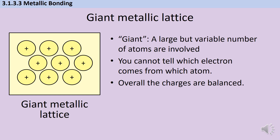When you're looking at that metal, you can't tell which electron has come from which atom. They've been completely delocalised, so they're no longer associated with the atom that they originally came from. Overall, the number of charges are going to be balanced. So if I have 1,000 sodium atoms that have lost 1,000 electrons, I'm also going to have 1,000 plus-1 ions. And if I have 10,000 magnesium atoms each with a 2+ charge, I'm going to have 20,000 negative electrons to balance that out.